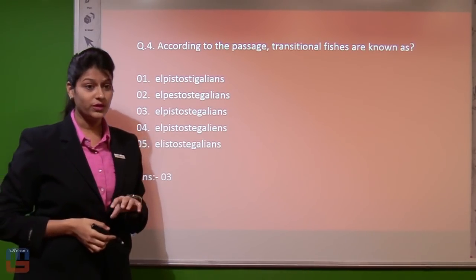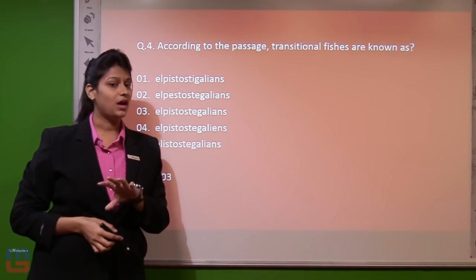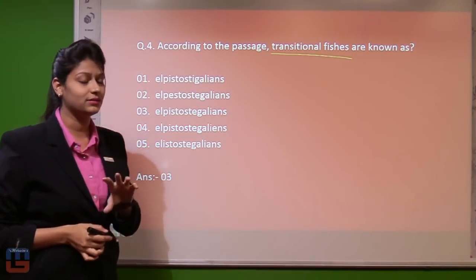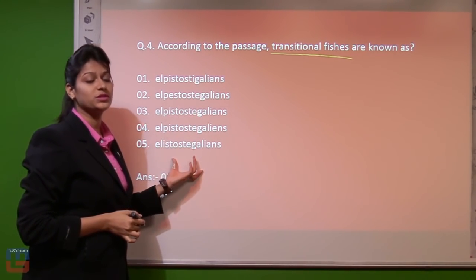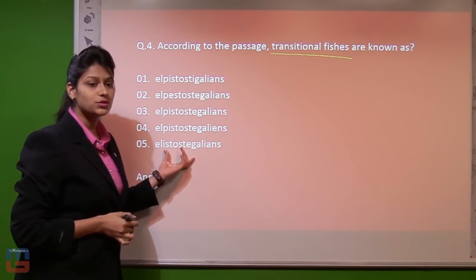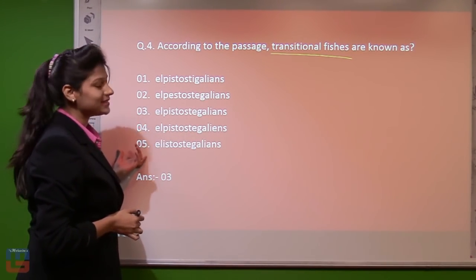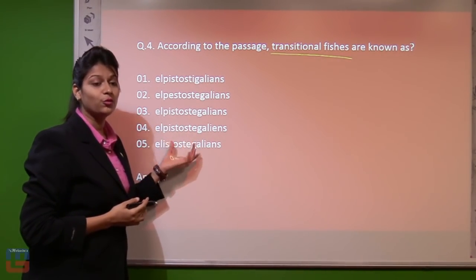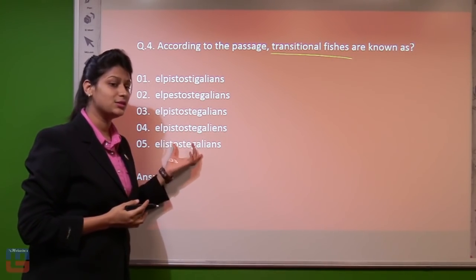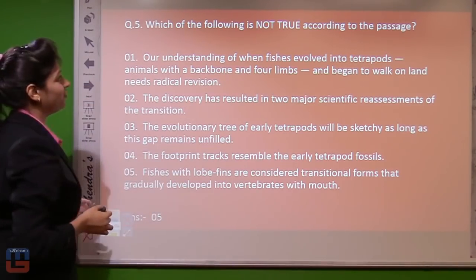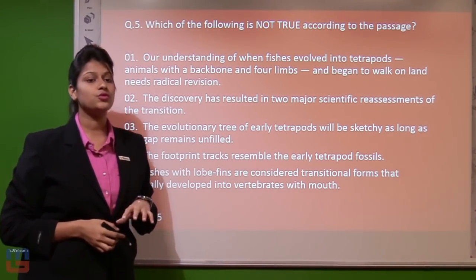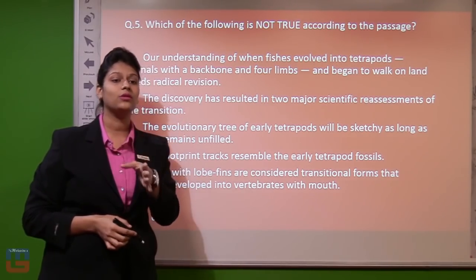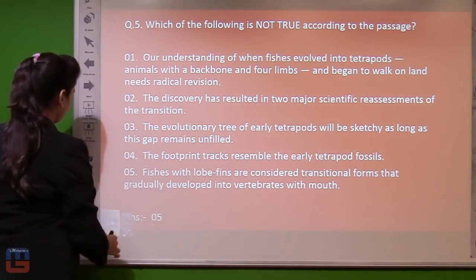Question number four asks: according to the passage, transitional fishes are known as — and the key point is 'transitional fishes'. I also notice that all five options given for this question are almost similar, with the only difference being in the spelling of the word. So whenever I come across this word in the passage, I have to note down its exact spelling. Question number five asks: which of the following is not true according to the passage? For this, you have to read the passage very thoroughly.